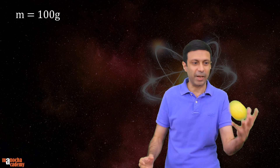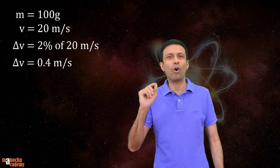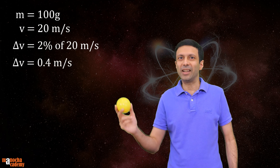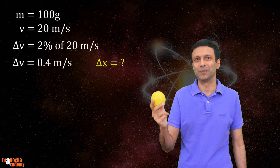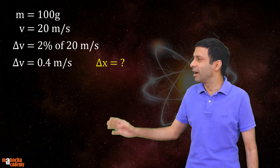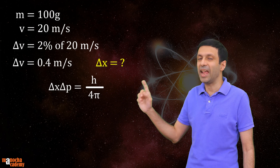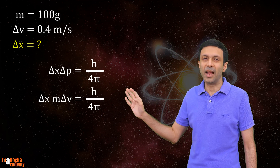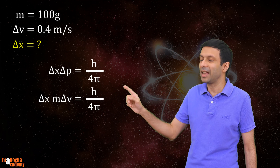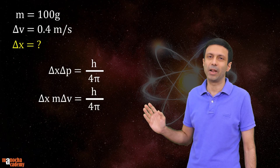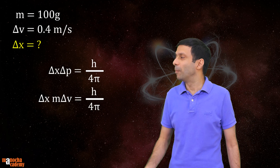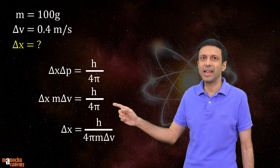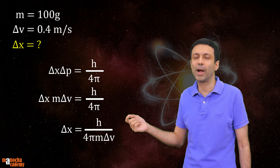Now let's take the example of a ball. The mass of this ball is 100 grams and it is moving at a speed of 20 meters per second. If the speed can be measured with an accuracy of 2 percent, calculate the uncertainty in the position of this ball. Using the relation delta x times delta p equals h divided by 4π, and replacing delta p with m times delta v, then rearranging gives: delta x equals h divided by 4π times m times delta v.